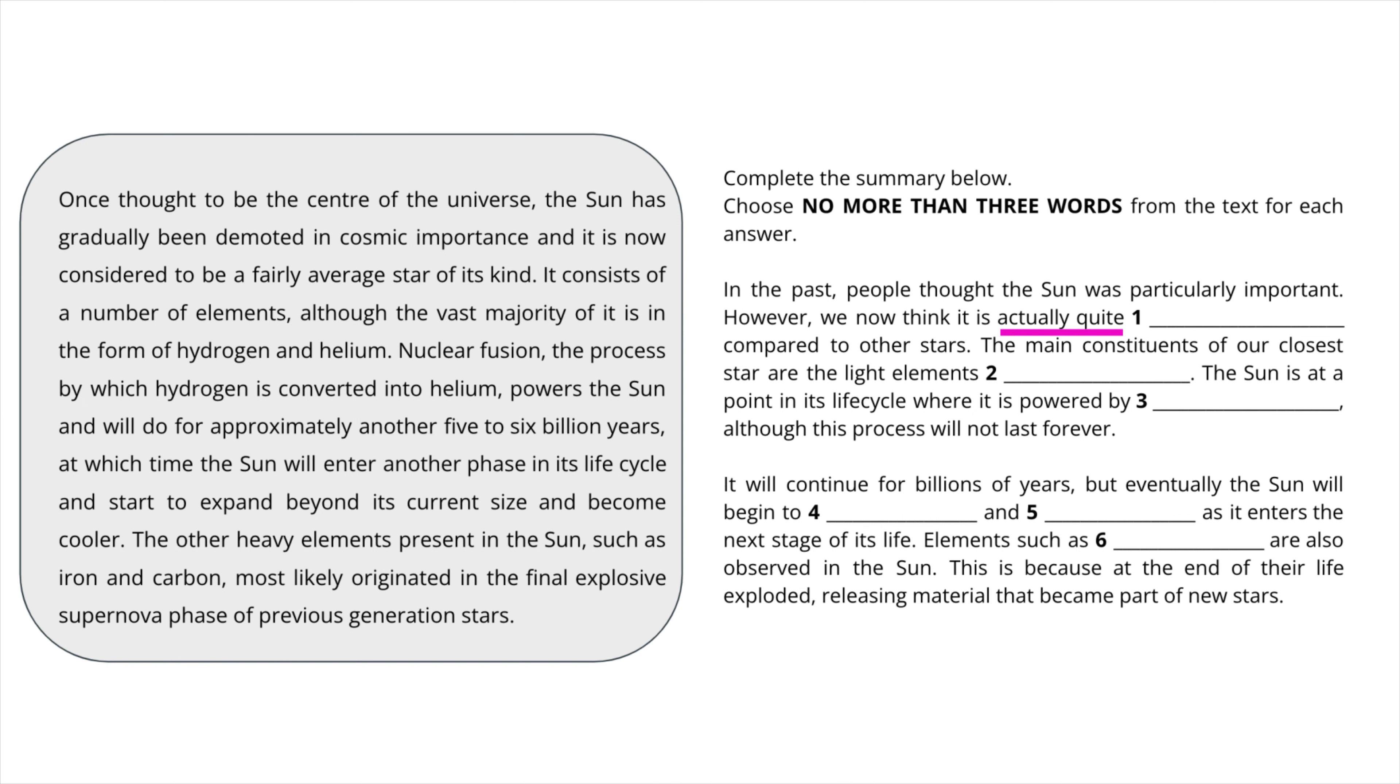Number two, 'light elements' or let's say the main constituents, what are the main constituents of this closest star. In this manner try to underline the keywords before and after the blank which will make you understand the paraphrase content in the passage. Now I will give you some time to complete all the six blanks and try to give the answers in the comments section below.